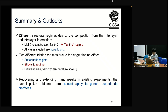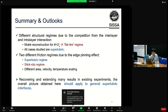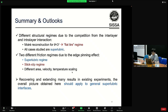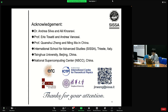That's all of my talk today. A brief summary: firstly, different structural regimes arise due to competition between interlayer and interlayer interactions, with a smaller-than-3-degree interesting flat-tile regime — all of these cases are superlubric. Second, two different friction regimes due to edge pinning effects: superlubric and stick-slip, with different area, velocity, and temperature scaling. Finally, recovering and extending many results from existing experiments, the overall picture should apply to general superlubric interfaces.